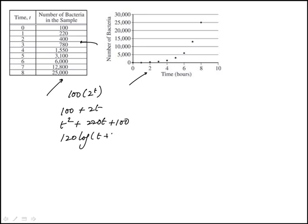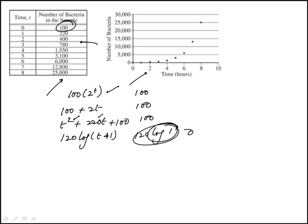Starting with t equal to 0, all the data points must satisfy the value of 100. For the exponential options, 2 to the power of 0 is 1, so those give 100 — correct. However, the logarithmic option gives 120 times log of 1, which equals 0, not 100. So we know that option is eliminated.